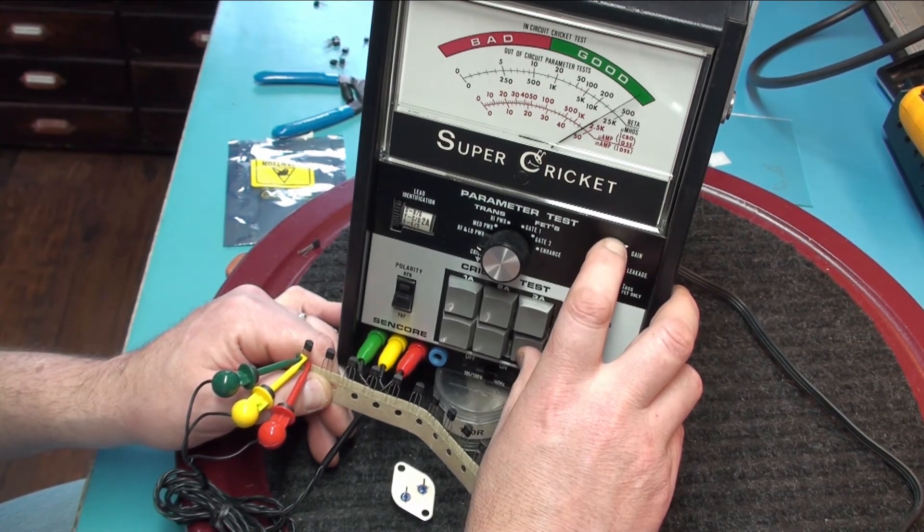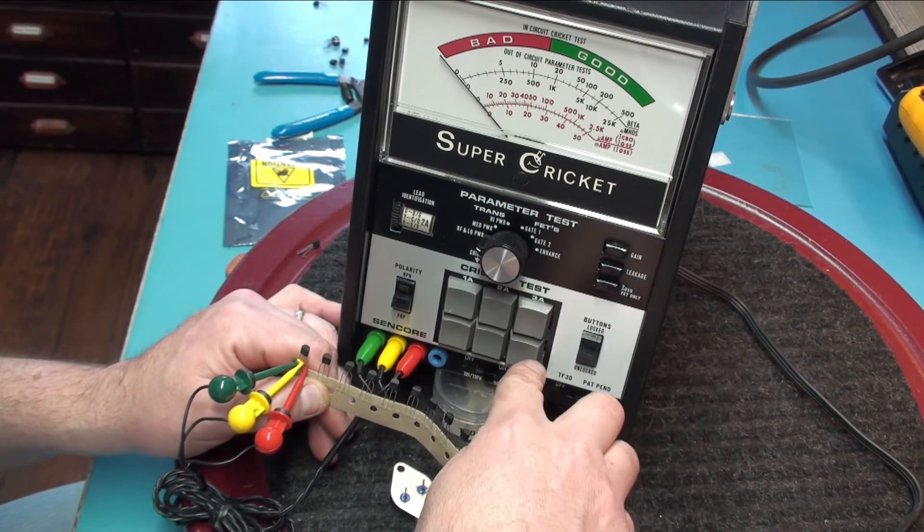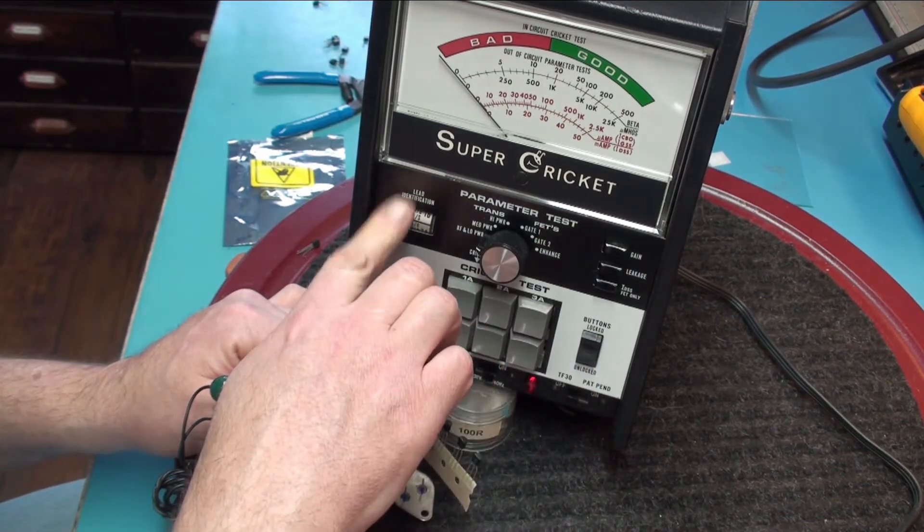And if I hit the 3B and hit Gain, my gain is 400. So we know 3B on the chart is our lead identification.